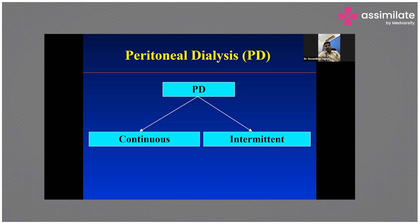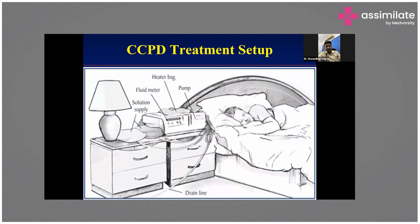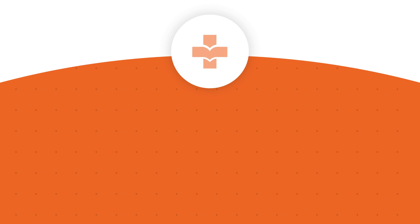There are different types of PD — continuous and intermittent. CAPD uses gravity for dialysis, while CCPD (cyclical PD) uses a machine. In CCPD the machine takes fluid inside and extracts fluid from the peritoneal cavity in a cyclical manner — gravitational force is not used. In India we hardly see CCPD because it is very expensive and affordability is an issue.